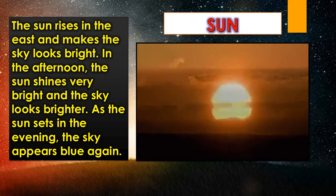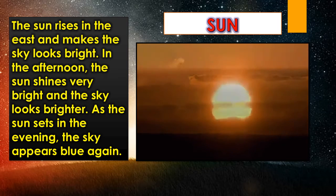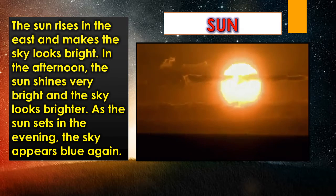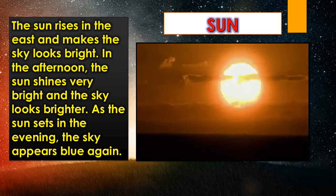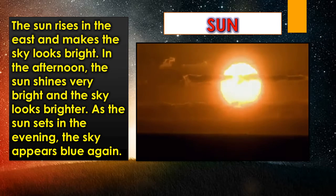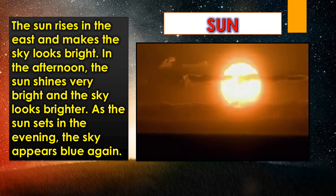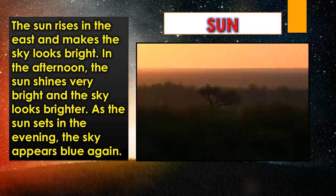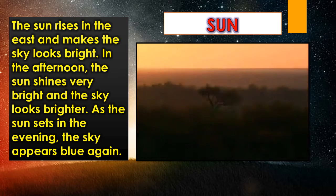That means when the sun rises, the sky looks bright. But in the afternoon it becomes brighter. And in the evening, when the sun sets in the west, the sky again appears to look blue.